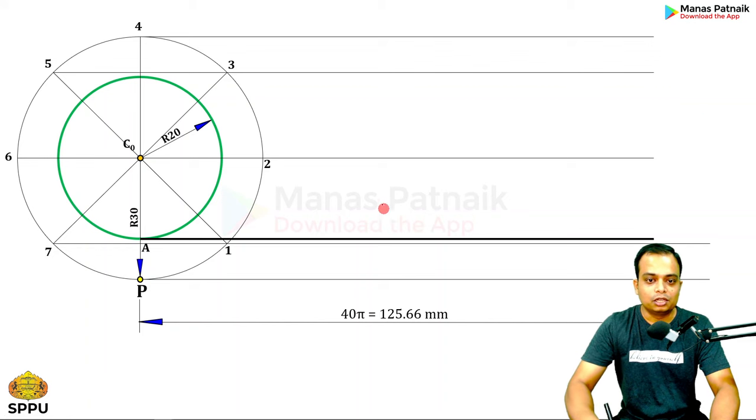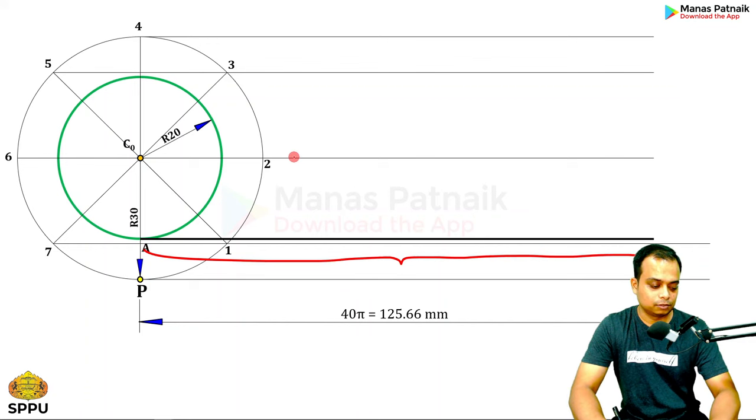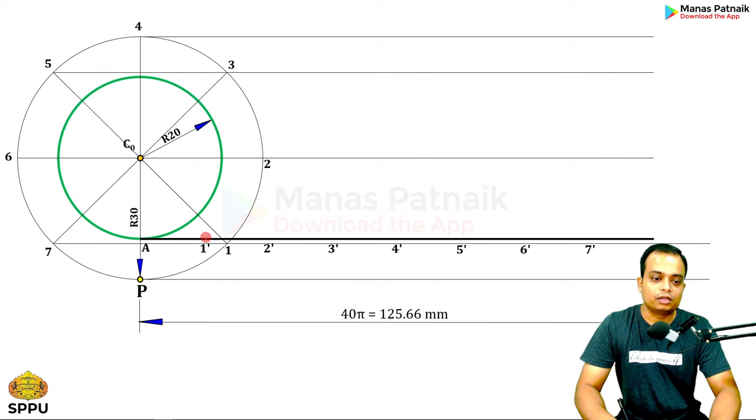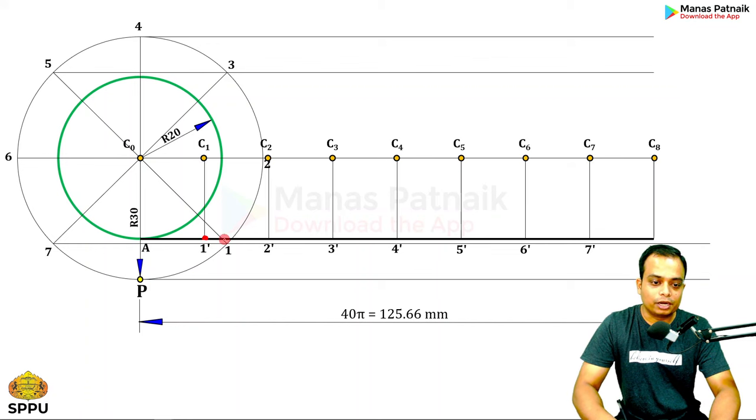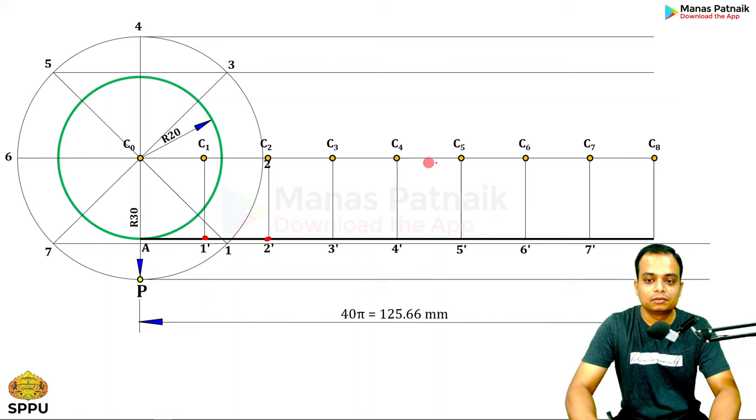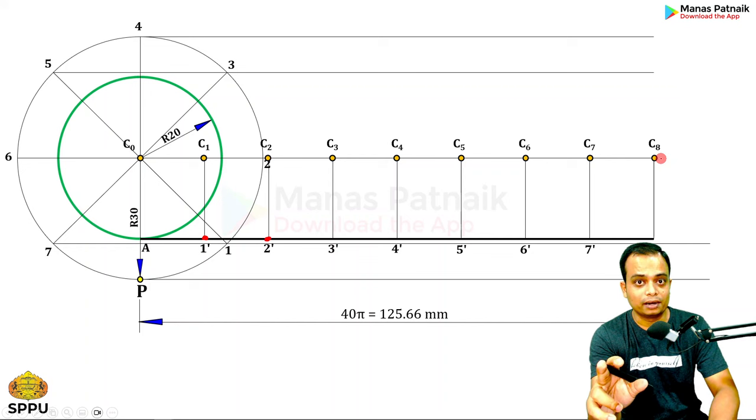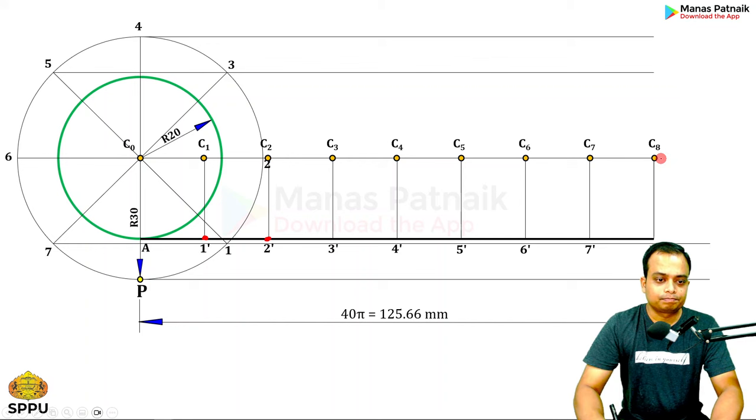Now what you need to do is using the line division technique, you need to divide this line AB into eight equal parts. So this is very easy. This is what you need to do. And then you need to send these points, you need to transfer these points over to this side. So that this is C0, this becomes C1, this becomes C2, C3, and so on until you reach C8. Line divisions technique is something that I have explained in the previous video also in question number one. Go ahead and watch that. It's a very basic case.